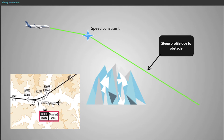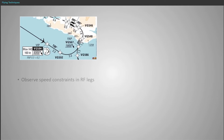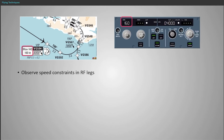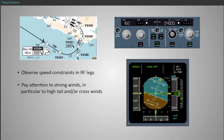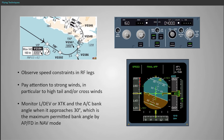Speed constraints may also support steeper paths and approach configuration management. The operational recommendations for RF legs are: observe the speed constraints in RF legs; pay attention to strong winds, in particular to high tailwinds and/or crosswinds; monitor LDEV or cross-track and the aircraft bank angle when it is approaching 30 degrees, which is the maximum permitted bank angle by the autopilot flight director in NAV mode.